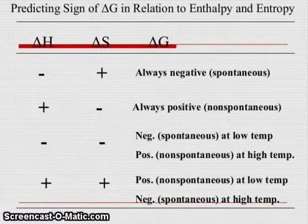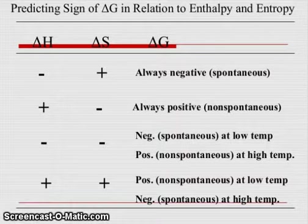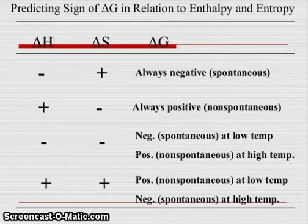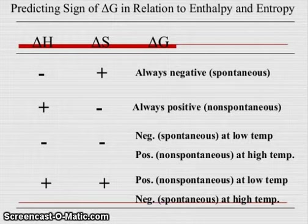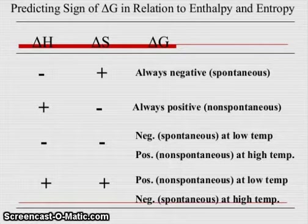Predicting sign of ΔG in relation to enthalpy and entropy. ΔH, ΔS, and ΔG: negative and positive gives always negative, spontaneous process. Positive and negative gives always positive, non-spontaneous. Negative and negative gives spontaneous at low temperature and positive at high temperature means non-spontaneous at high temperature. If positive values, then positive value means non-spontaneous at low temperature. If negative value, spontaneous at high temperature.